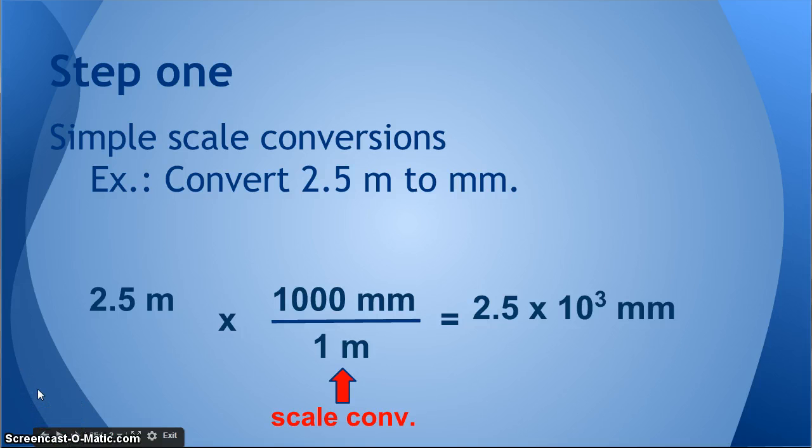Step one. There's basically five different types of factor label problems that you'll have to do. The first type, step one, is a simple scale conversion. This means just going to a smaller or larger unit within the same system of measurement, so converting 2.5 meters to millimeters, for example.